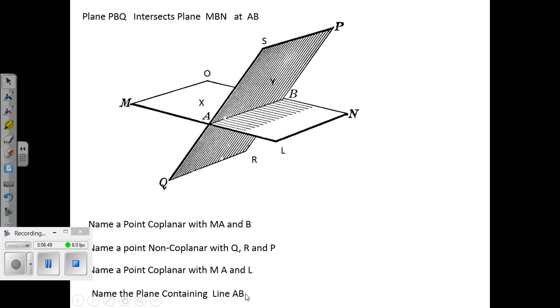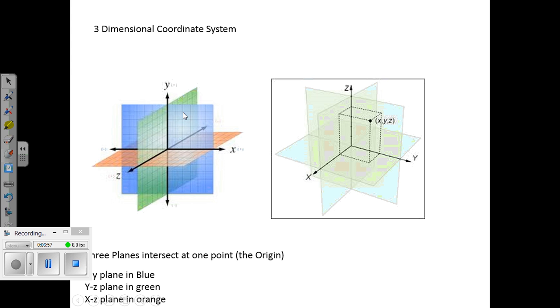Name a plane containing line AB. Well, the two planes there both contain line AB. Here's a three-dimensional coordinate system.